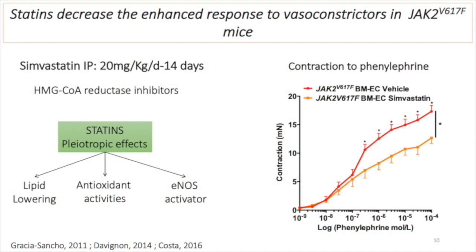In addition to demonstrating how the JAK2 mutation induces this increased arterial contraction, our results open new potential therapeutic perspectives to prevent cardiovascular events in patients with myeloproliferative neoplasms. Indeed, we demonstrated that simvastatin, a well-known and easily accessible drug, strongly improved arterial response to vasoconstrictive agents in our mouse model. These results pave the way for testing simvastatin to prevent arterial events in patients with myeloproliferative neoplasms.